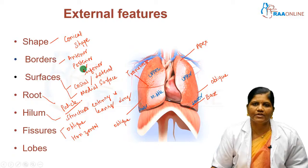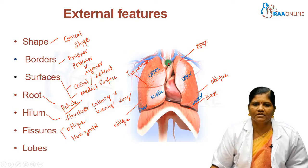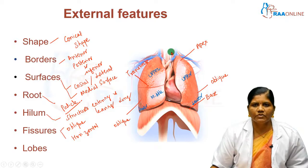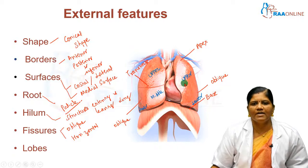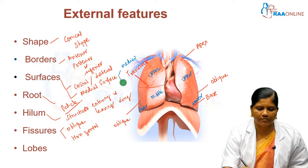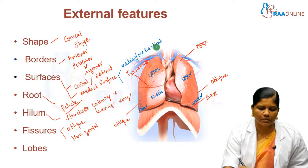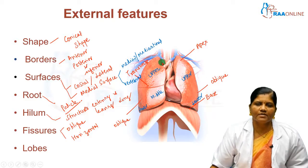To summarize the external features: the lung is conical in shape with an apex and base, and three borders. The anterior border of the right lung is located anteriorly, and the left lung also has an anterior border. The posterior border is closely related to the vertebral column and the posterior aspect of the ribs. The lung has two surfaces: the costal or lateral surface, related to the thoracic cage, and the medial surface, which is subdivided into the mediastinal part and the vertebral part.